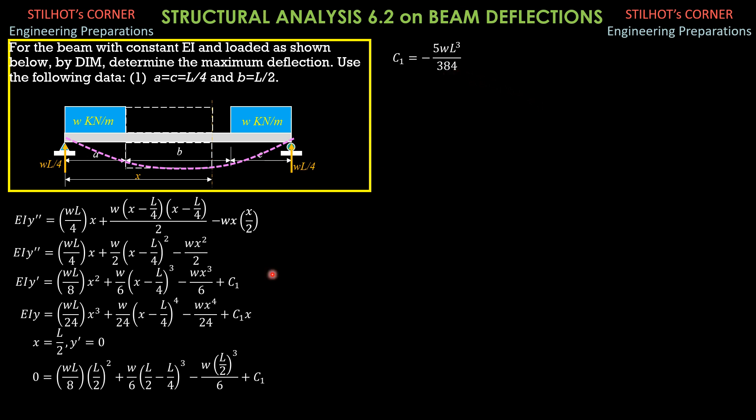Having found C sub 1, we can now evaluate the center line deflection here, the deflection at the center, which is maximum, into this equation here with C sub 1 known. So X is L over 2, so EI delta center is equal to WL over 24 times L over 2 quantity cube plus W over 24 quantity L over 2 minus L over 4 quantity raised to fourth minus W over 24 times L over 2 raised to fourth plus C sub 1 negative 5 WL cube over 384 times L over 2.